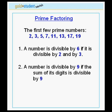Another trick is that a number is divisible by 9 if the sum of its digits is divisible by 9. For instance, the number 207 has the sum of its digits 2 plus 0 plus 7 equal to 9, which is divisible by 9. Therefore, 207 is divisible by 9.